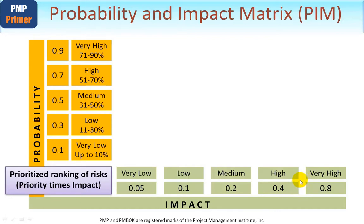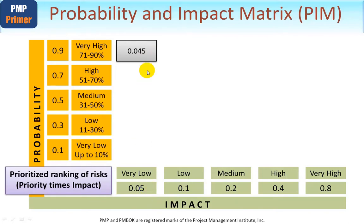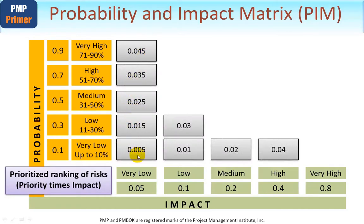Because we have a 5-by-5 matrix, we can produce a 25-field grid. Each cell is simply the result of multiplying its probability number by its impact number. For example, the very first cell is 0.9 multiplied by 0.05, which gives 0.045. Filling in the remaining gray-colored cells follows the same logic — each number is probability times impact.